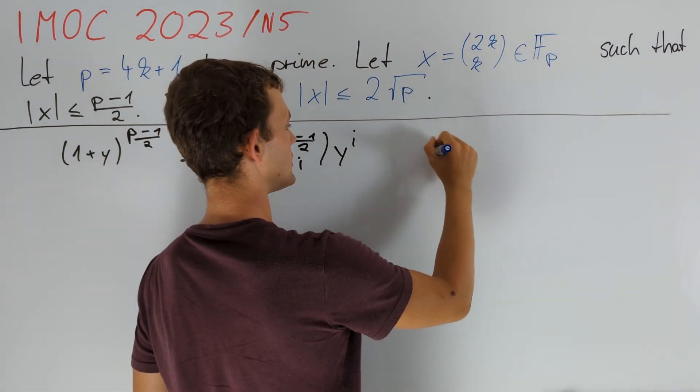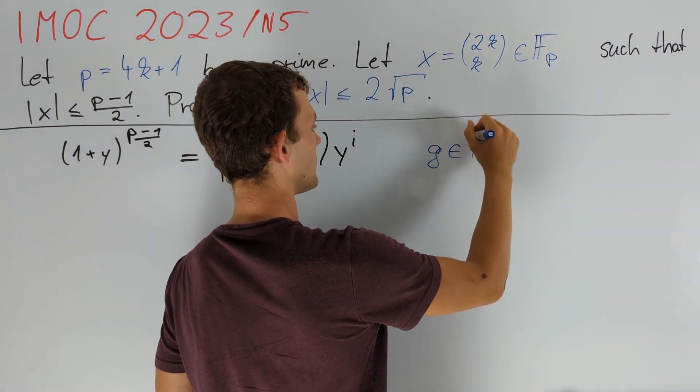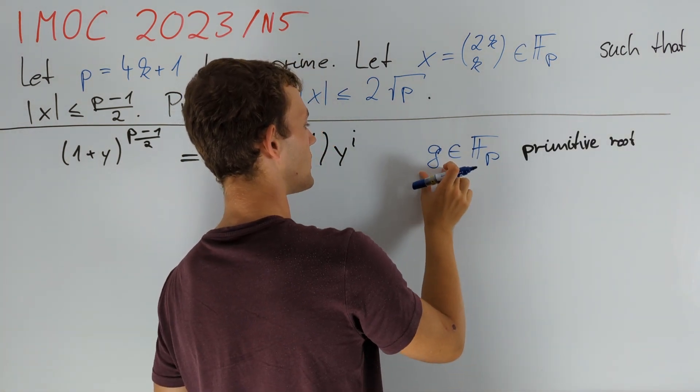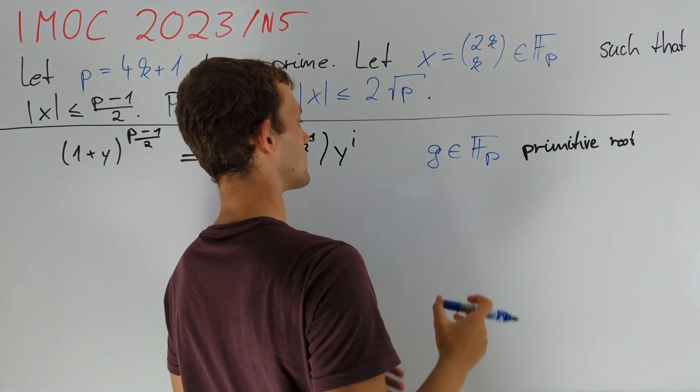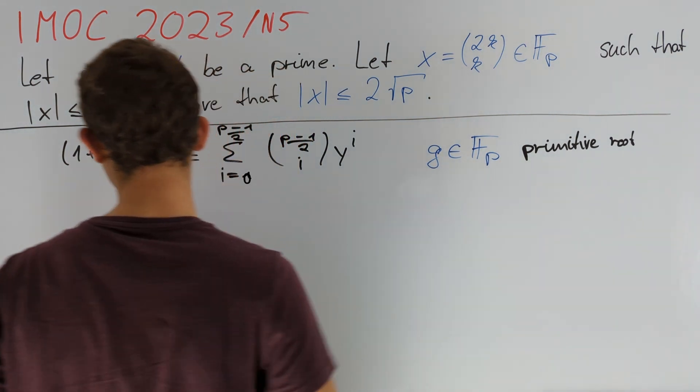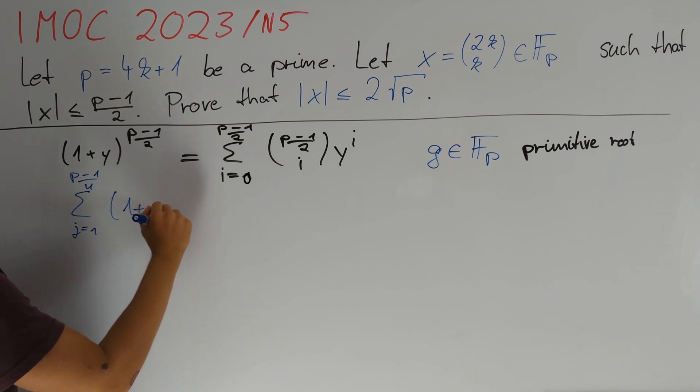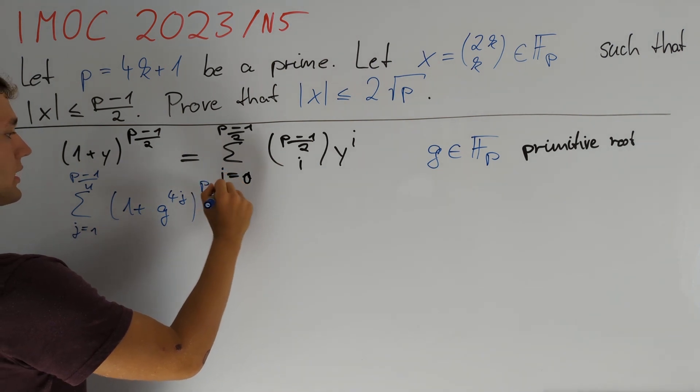So let us define g in Fp to be a primitive root. This tells us that g, g squared and so on up to g to the power of p-1 are all the non-zero residues in Fp. And therefore we can now write that the sum of j going from 1 to (p-1)/4—this is the number of quartic residues modulo p—of (1 + g^(4j))^((p-1)/2).